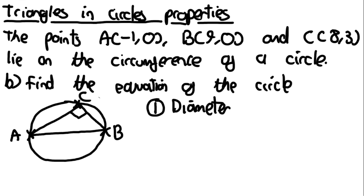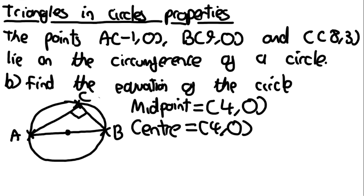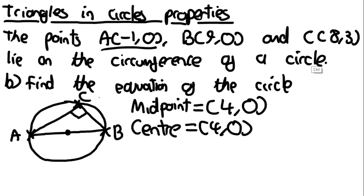Where line AB is the diameter, we approach this by noting that the centre of the circle lies on the diameter, so we can find the centre as simply the midpoint between A and B. The midpoint of x-coordinates −1 and 9 is 4, and the midpoint of y-coordinates 0 and 0 is 0. So the centre of the circle is (4, 0). We're now halfway to finding the equation of the circle.